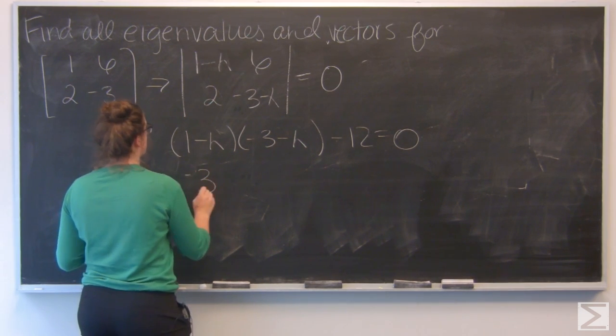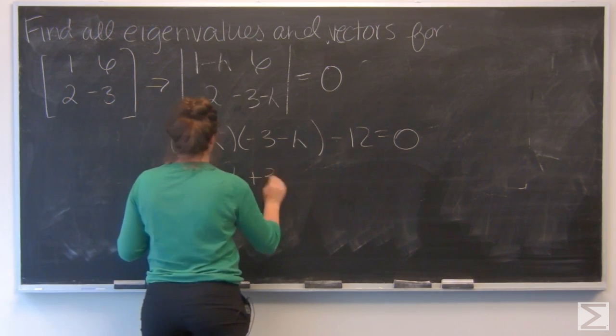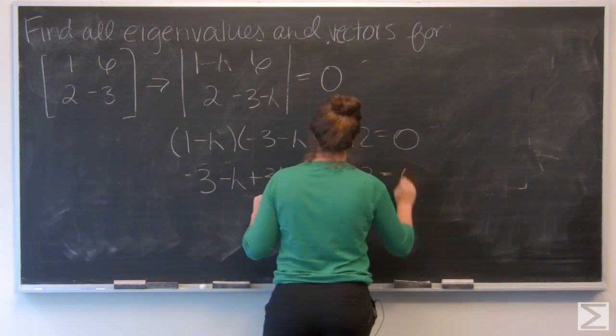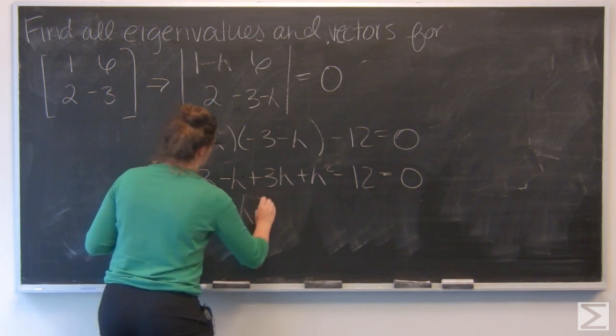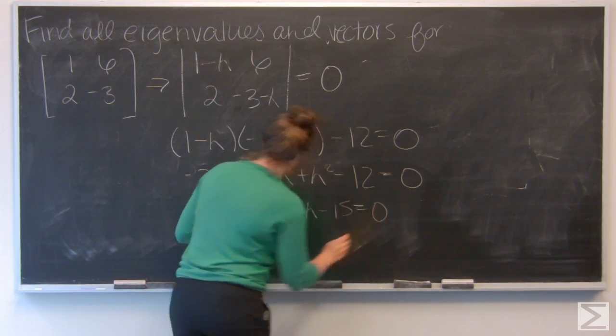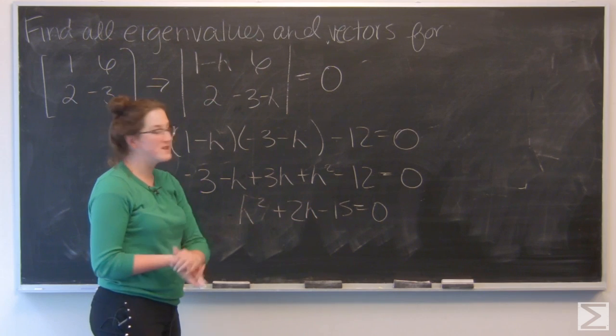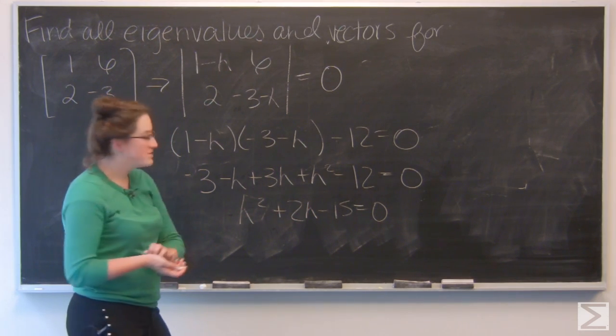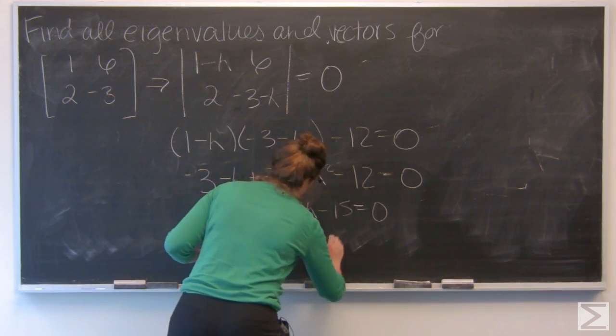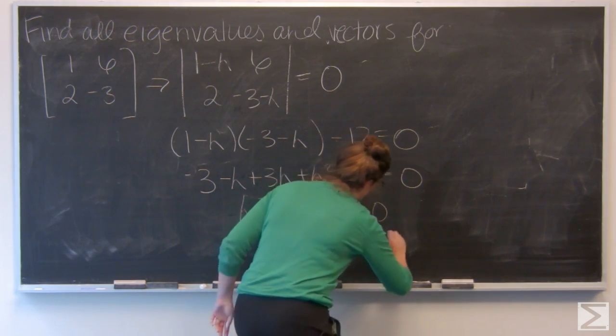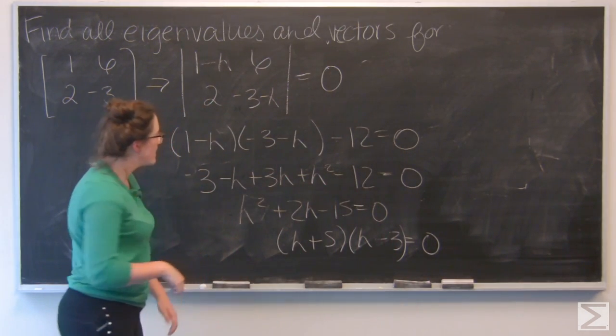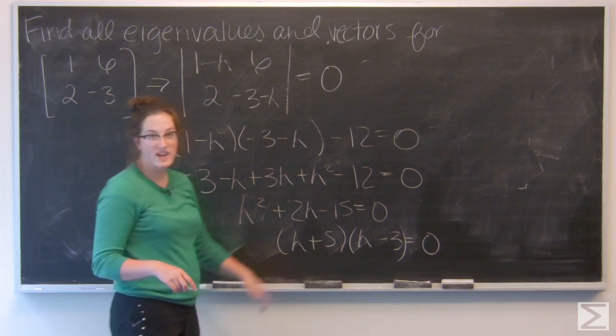So I have lambda squared plus 2 lambda minus 15 equals 0. And I can factor this into lambda plus 5 and lambda minus 3. So that gives me my two eigenvalues of 3 and negative 5.